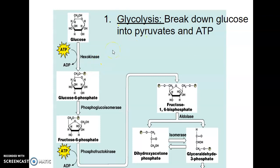I bring that up because it's a common misconception. A lot of students think: isn't the process supposed to make energy? Why are we using energy? So for glycolysis, we're breaking down glucose into pyruvates and ATP. In the first step, we have one molecule of glucose and we're using one ATP, breaking it down into ADP and an inorganic phosphate. We're also using an enzyme called hexokinase to phosphorylate the glucose molecule. We add a phosphate group to the sixth carbon of glucose, creating glucose-6-phosphate. Using one ATP and hexokinase is what we call substrate-level phosphorylation — you are phosphorylating the substrate by using an enzyme.